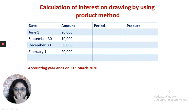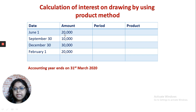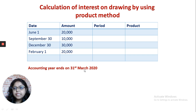Here is an example. The partner withdrew 20,000 on the 1st of June. You calculate how many months are left till the end of the accounting period, which ends in March 2020. Counting from June: June, July, August, September, October, November, December, January, February, March — that comes to 10 months. So the period is 10 months and the product is 20,000 × 10 = 2,00,000.